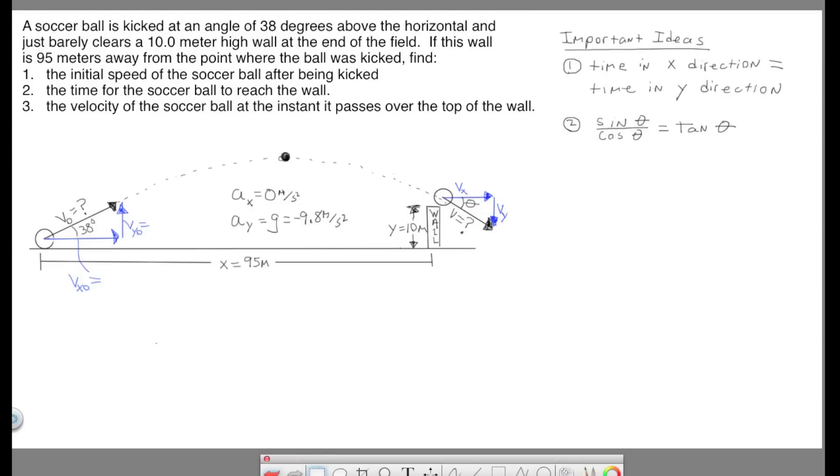Okay, so let's make some room to solve our first question. The first question is find the initial velocity of the soccer ball. All we're given is that the angle that the soccer ball is kicked at is 38 degrees. And then we're told that it travels horizontally 95 meters and then barely passes over a wall that is 10 meters high. So this point right here is going to be a very valuable point. Because at this location, we have the X displacement and the Y displacement of the ball. So at this location, we know that the Y displacement is 10, positive 10, and the X displacement is 95.